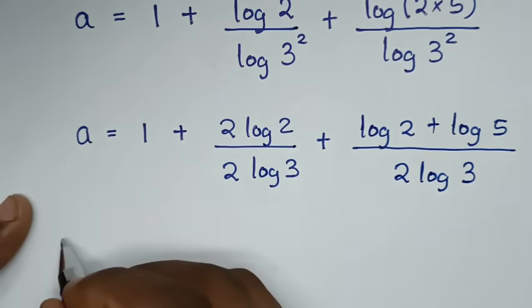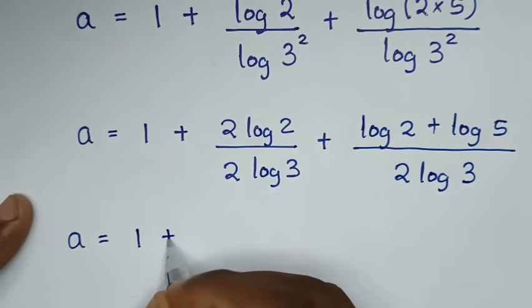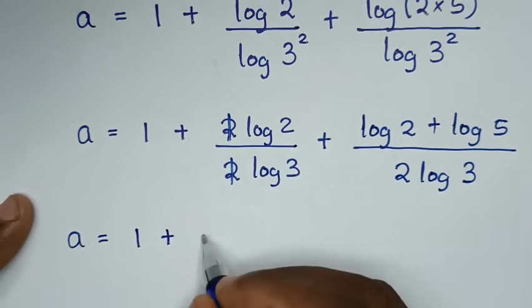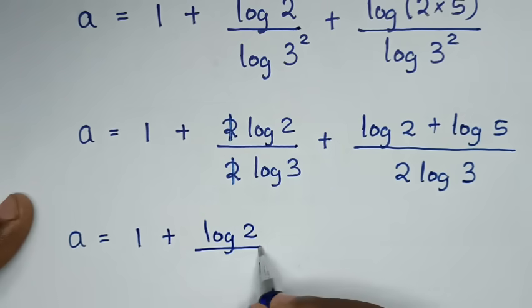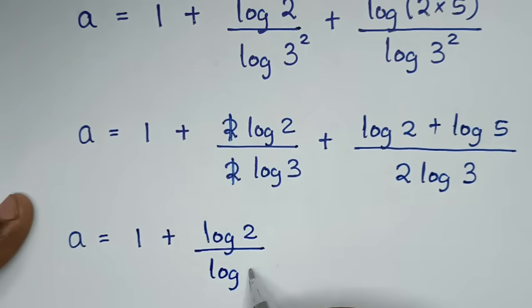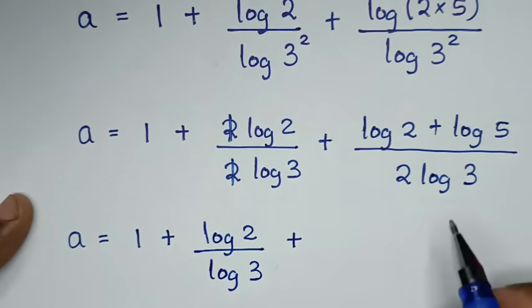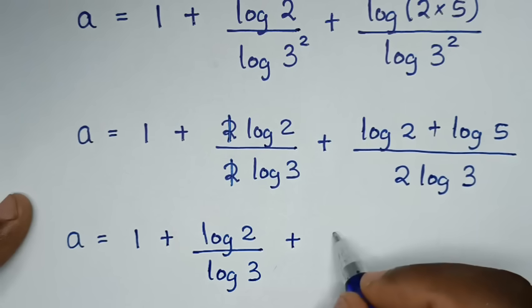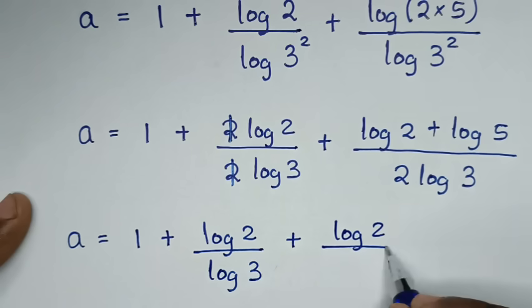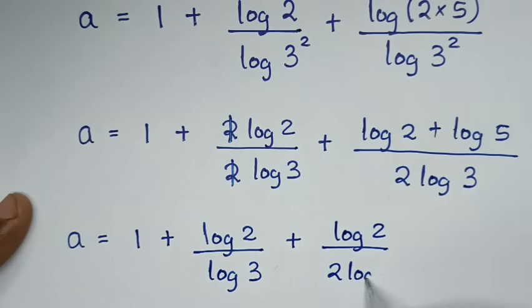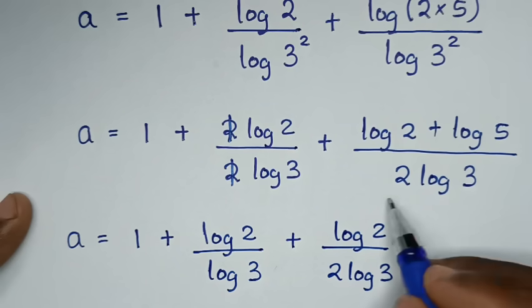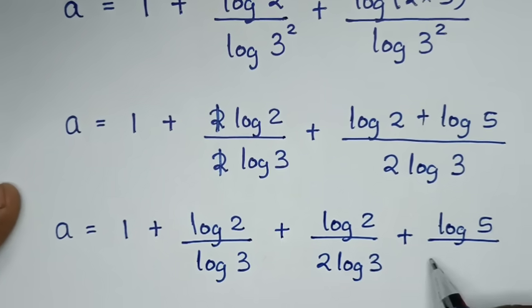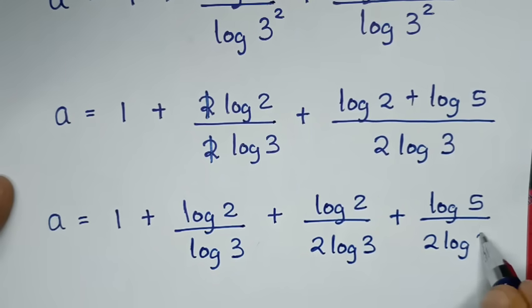Then in the next step, it will be a is equal to 1 plus — here this 2 will cancel this 2 — so it will be log of 2 over log of 3, plus here we will divide by 2 log of 3. So it will be log of 2 over 2 log of 3 plus log of 5 over 2 log of 3.